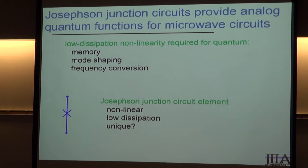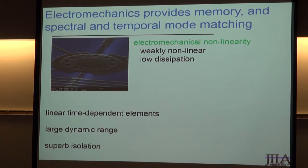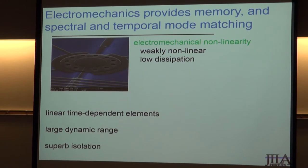But it's not true that the Josephson junction is the only nonlinear and low-dissipation electrical circuit element available. The physics of electricity coupled to mechanical motion can be both nonlinear and low dissipation. The nonlinearity is a fair bit weaker, but that's fine for anything where the signal processing functions can be thought of as linear but time-dependent. Any time we want really large dynamic range, or want information encoded in a microwave field to be hidden and isolated from other microwave elements, electromechanical circuit elements will be extraordinarily useful.